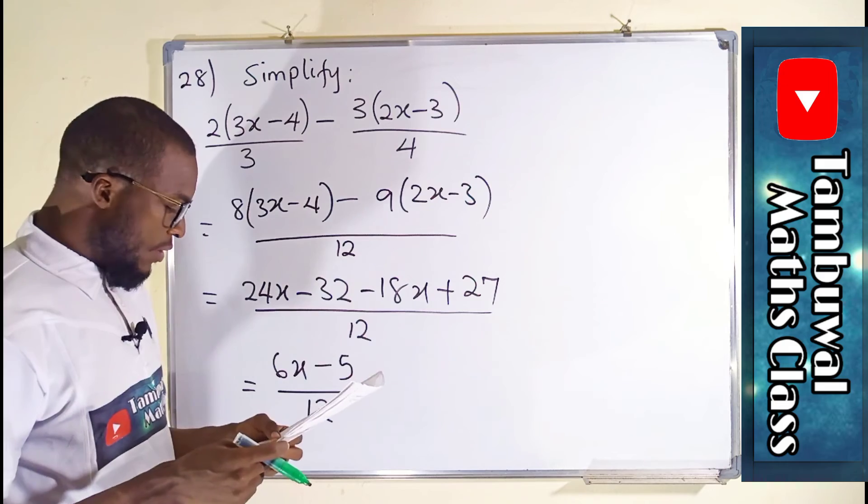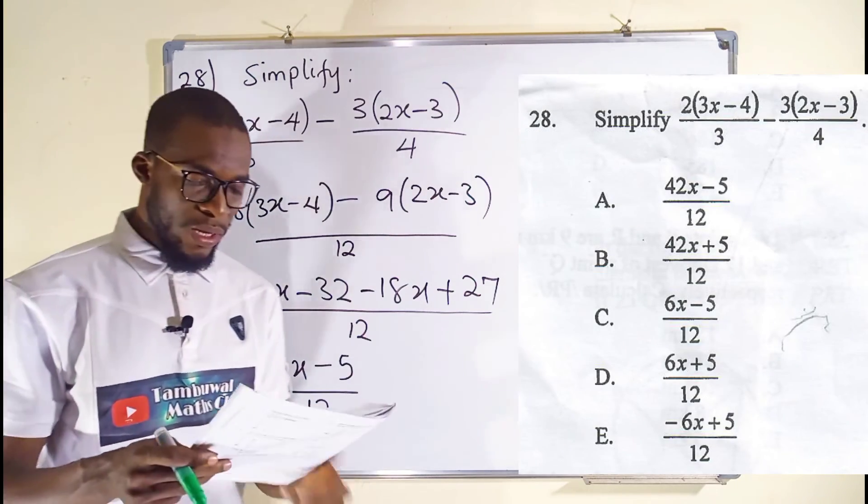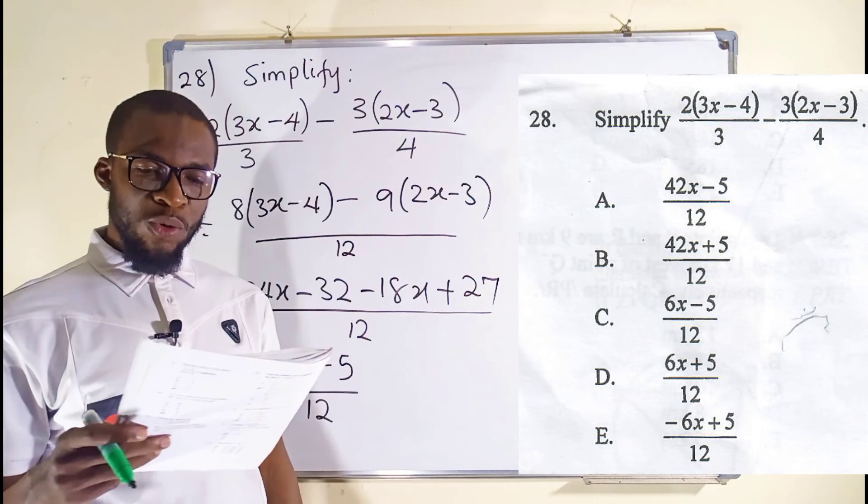And I think it is the option C here. 6x minus 5 divided by 12. Now let us look on to question number 29.